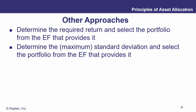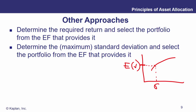Some other approaches: if a client says they want to earn at least a required return, we look at the efficient frontier and identify the portfolio that provides it. We go to the curve and read off the corresponding standard deviation and expected return. Alternatively, if a client says they don't want to take on risk above a certain level — a maximum standard deviation — we go along the x-axis to that value, go up to the efficient frontier, and read off the expected return they would earn.